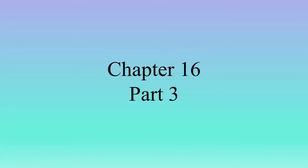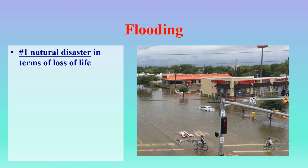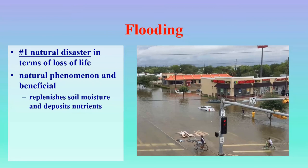Welcome to the last part of chapter 16, part 3, where we're talking all about flooding. This is a picture of downtown Houston after the hurricane that hit that area a couple years ago — you can see all the water sitting in there. Flooding, remember when I told you that whatever has to do with water is always the deadliest? Well, flooding is the wateriest and the deadliest of the natural disasters — it's the number one natural disaster in terms of loss of human life.